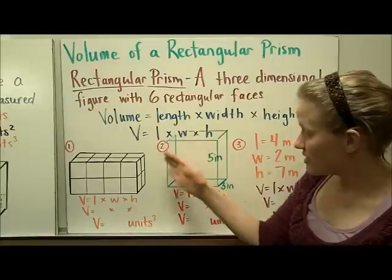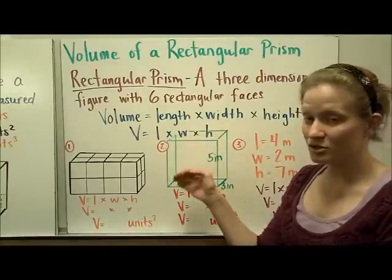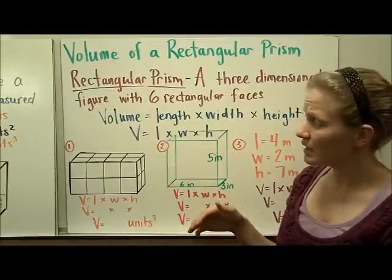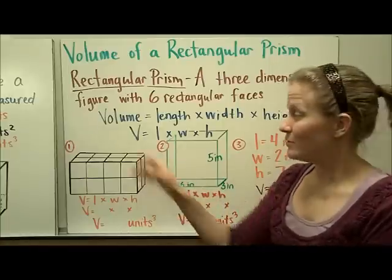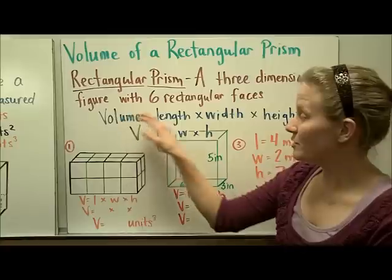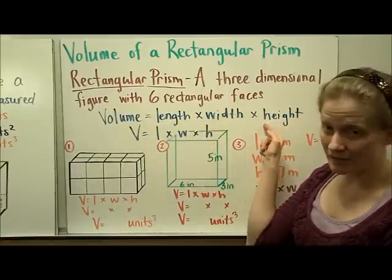That means every side or face of the shape is a rectangle. So any rectangular prism, you can find its volume by using this formula: the length times the width times the height.